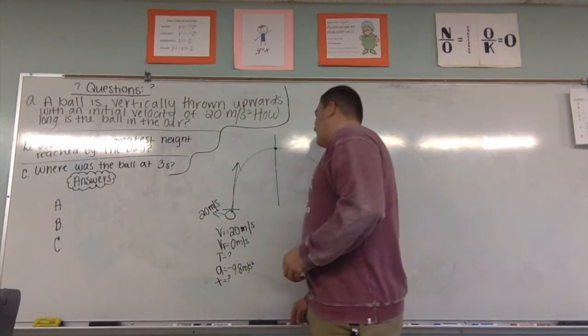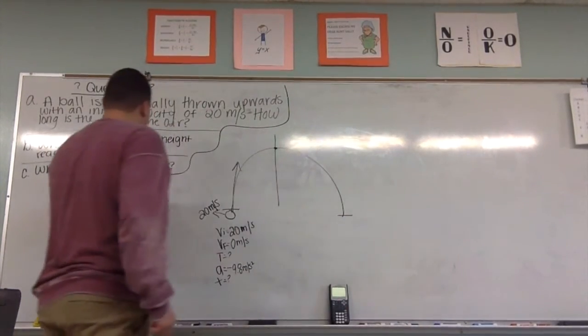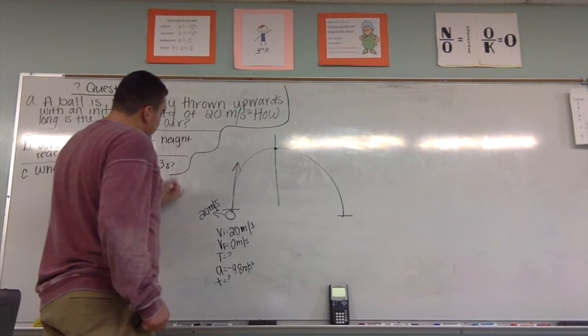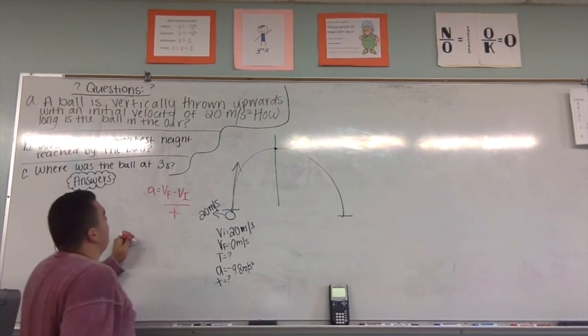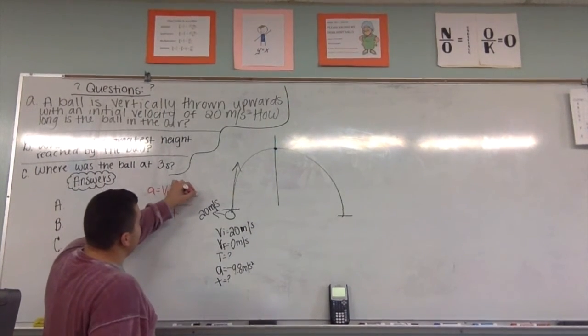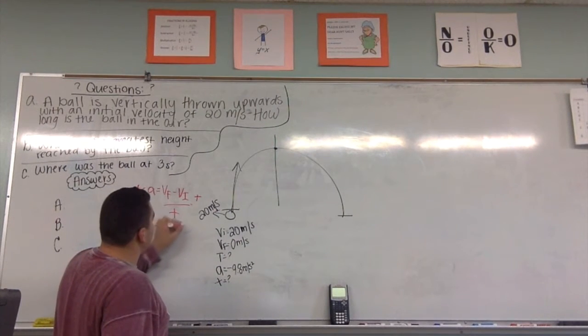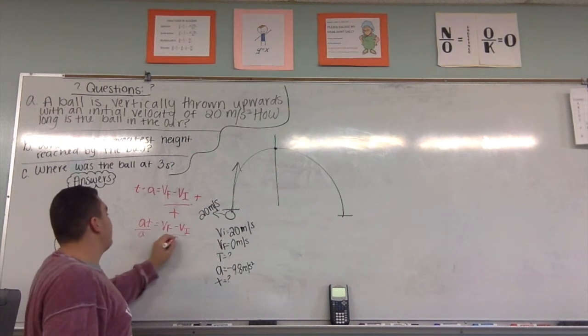First, we're going to solve for time. We're going to use our acceleration formula. Acceleration equals final velocity minus initial velocity divided by time. We know we can get time by itself by multiplying on each side, leaving us with this equation. If we divide acceleration, we're left with time.